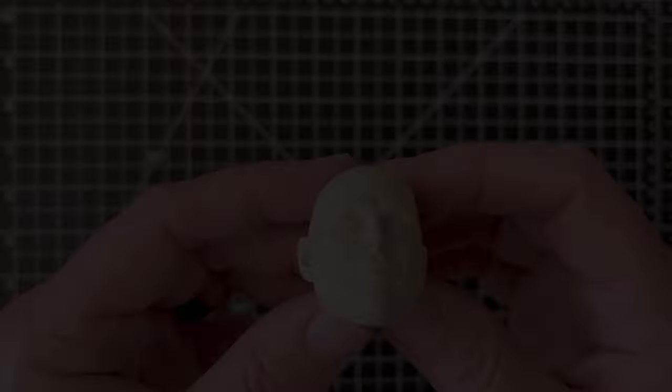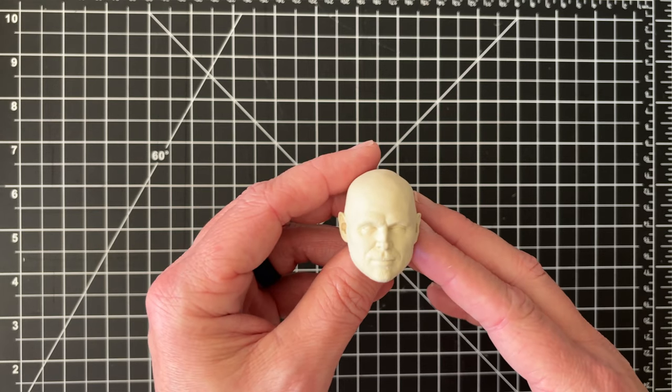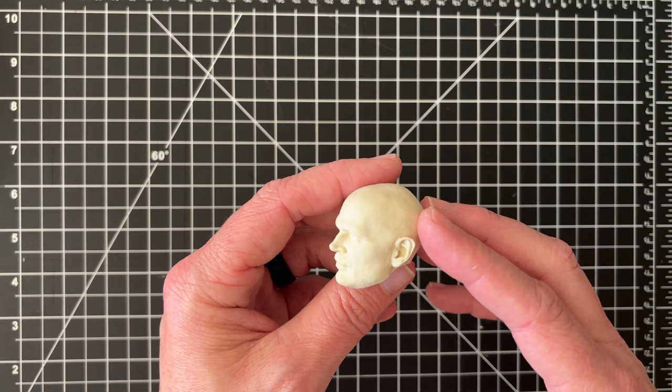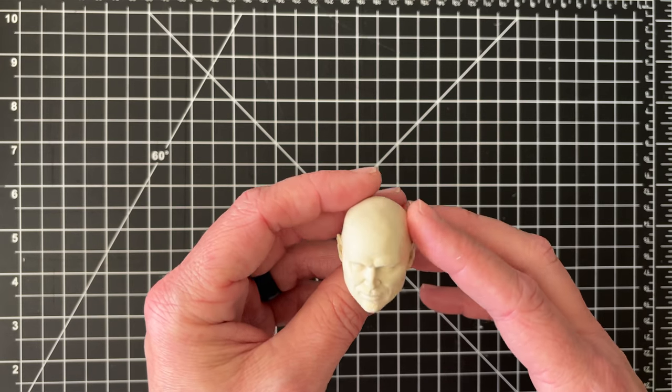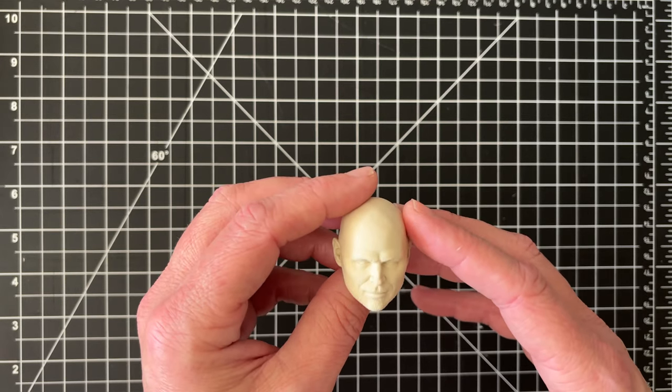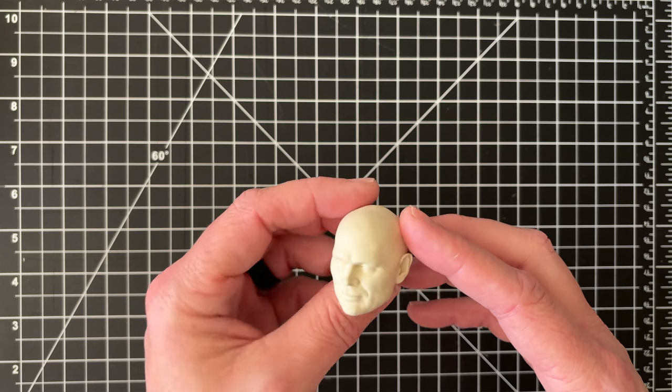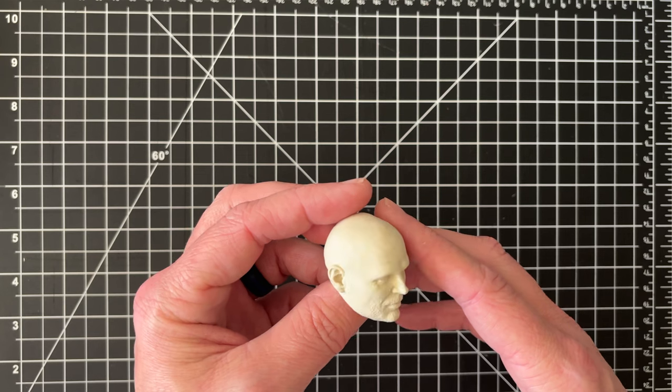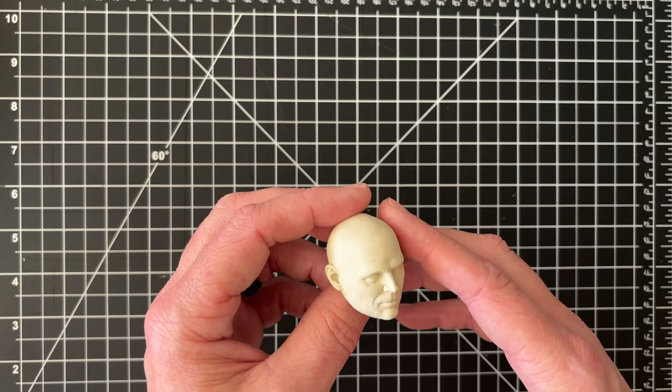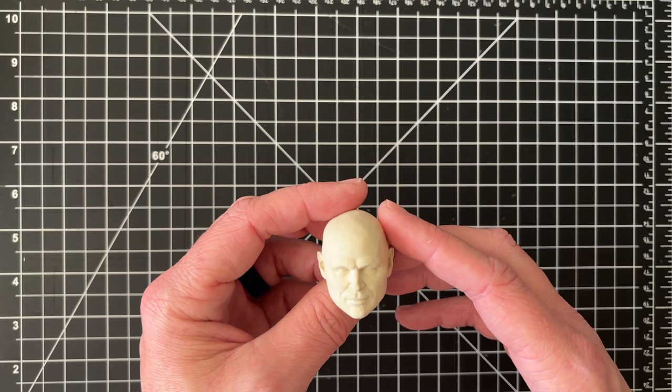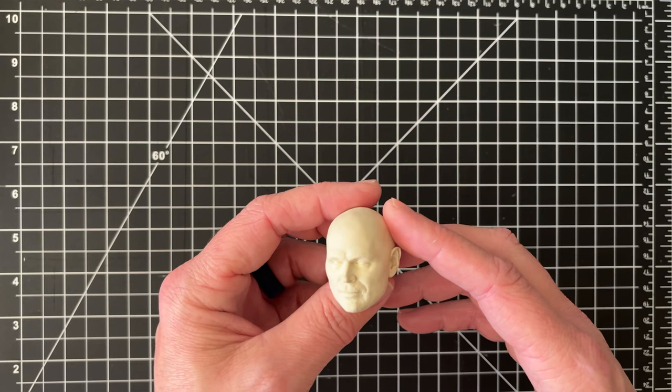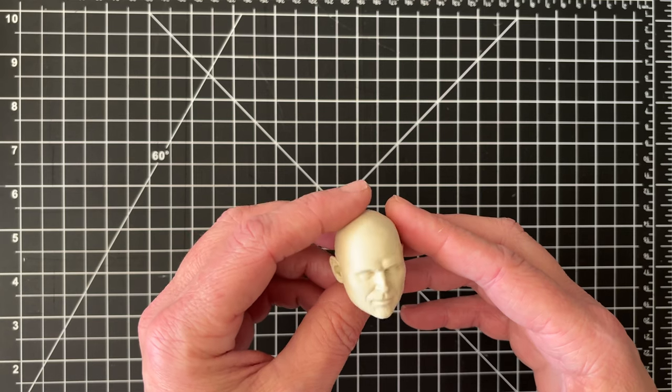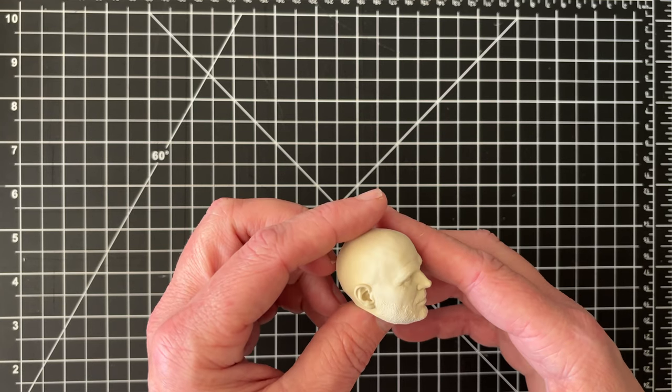I picked this head sculpt up from Rocco Tartamella. I may have just slaughtered that last name. If I did, Rocco, I apologize. Now when I got this, I didn't realize it at the time, but Rocco is evidently a pretty big deal within the industry. He has worked with Hasbro, McFarlane Toys, NECA, Gentle Giant, and the list just goes on from there. So I am super excited to have this, super excited to add it to my collection.